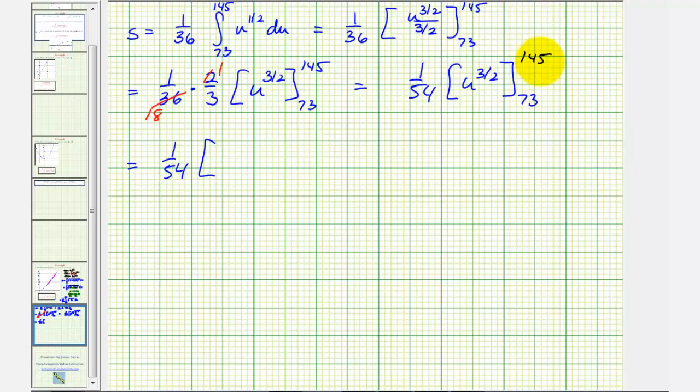So first u is equal to 145. So we have 145 raised to the 3 halves, minus 73 to the 3 halves.